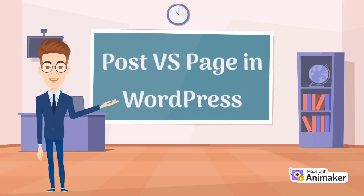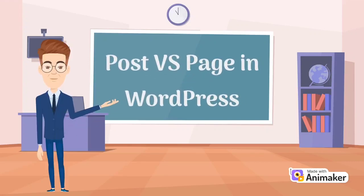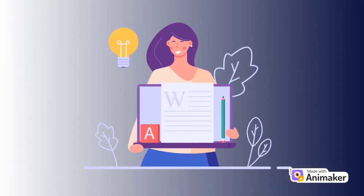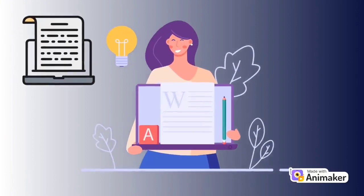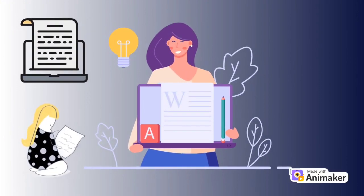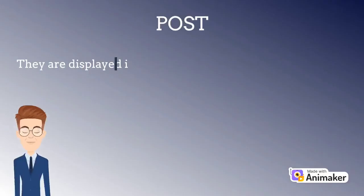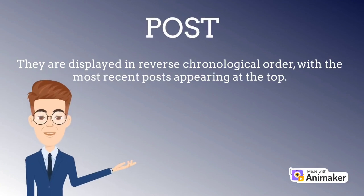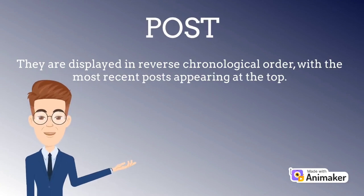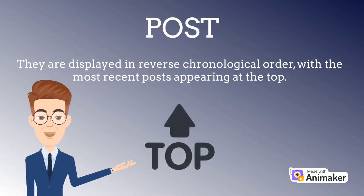Post versus page in WordPress. Posts are typically used for blog-style content, such as articles, news stories, and updates. They display in reverse chronological order, with the most recent posts appearing at the top.